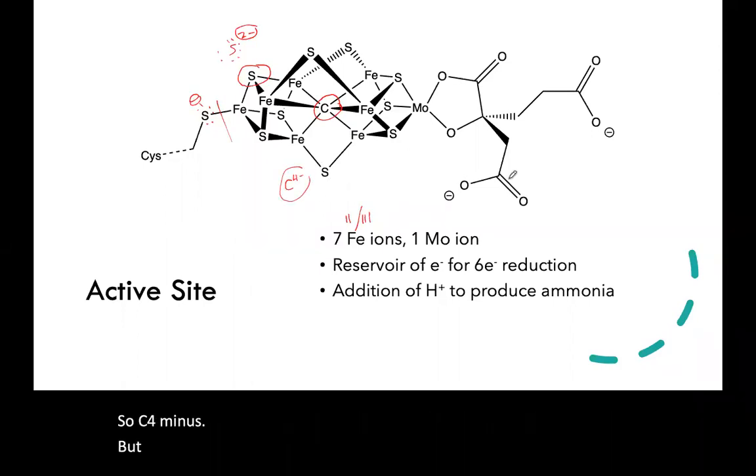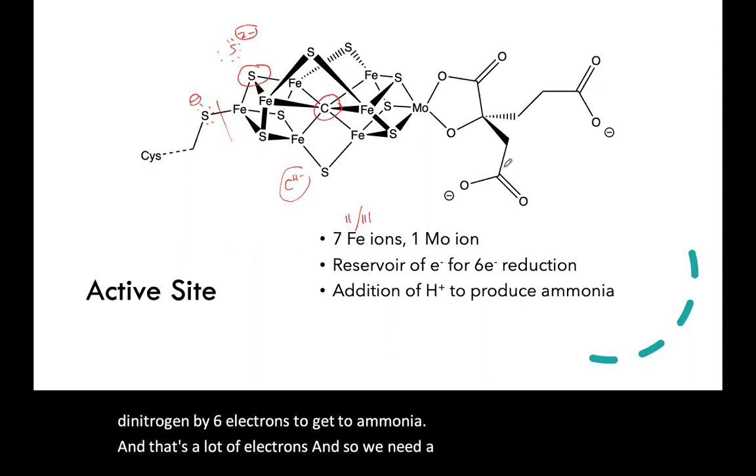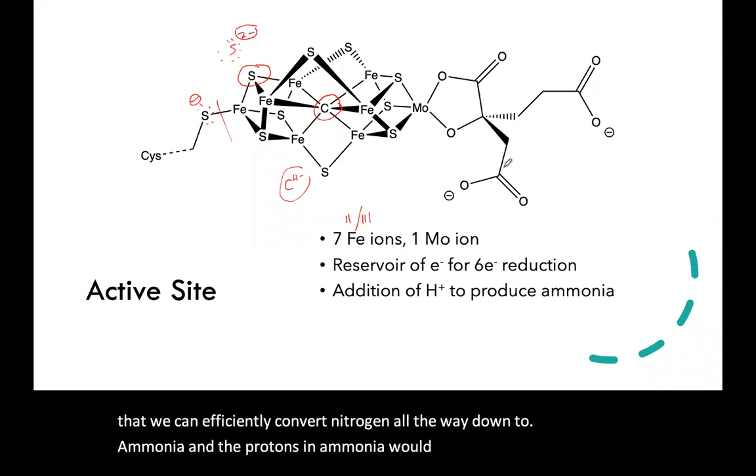But why do we have all of these atoms in this cluster to reduce nitrogen to ammonia? The general answer is that we've got to reduce that nitrogen, the dinitrogen, by six electrons to get to ammonia. That's a lot of electrons, and so we need a reservoir of lots of electrons that we can efficiently convert nitrogen all the way down to ammonia. The protons in ammonia would come from surrounding amino acids.